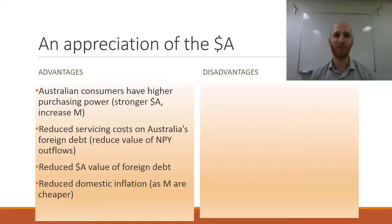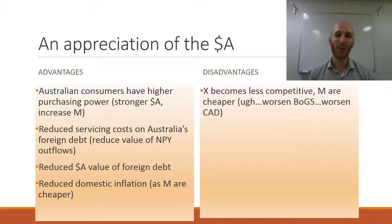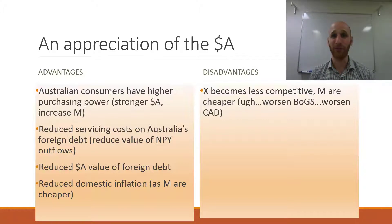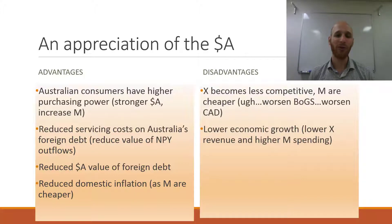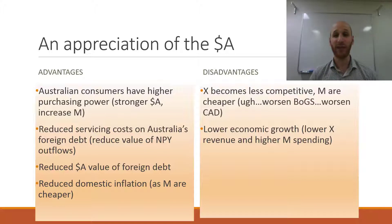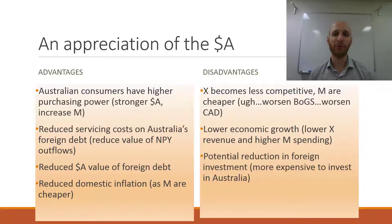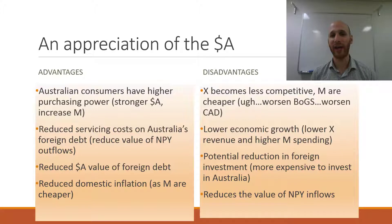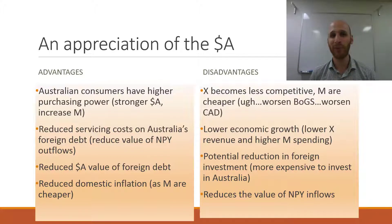Let's look at the less favourable aspects of a rise in the Aussie dollar. Exports become less competitive while imports are cheaper, which will worsen the balance of goods and services and worsen the current account deficit. A higher Australian dollar could also lead to lower economic growth, because lower export revenue comes at a time of higher spending on imports. There is also a potential reduction in foreign investment into Australia because it is more expensive to invest in Australia when the dollar is higher. Another disadvantage is that a higher Australian dollar reduces the Australian dollar value of NPY inflows — so if an Australian invests in an American company and receives dividends, those will be worth less in Australian dollar terms.